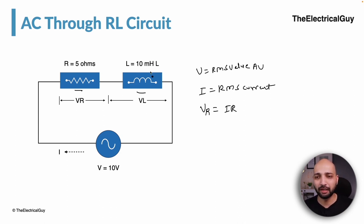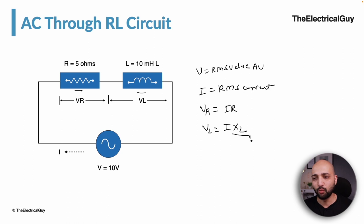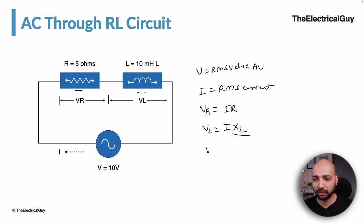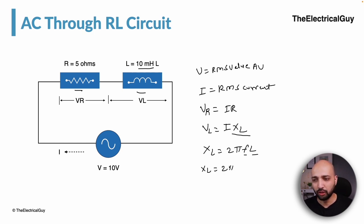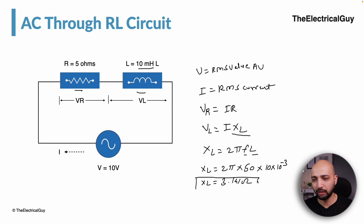Similarly, we have an inductor of 10 mH, and there will be a voltage drop across it labeled VL, which equals I times XL. XL is the inductive reactance, and the formula is XL = 2πFL. F is the frequency — we consider it as 50 Hz — and L is the inductance given as 10 mH. Converting to henry: 10 × 10⁻³. The calculated XL is 3.141 ohms. Inductive reactance is measured in ohms, just like resistance.